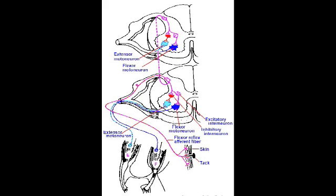This afferent fibre — afferent meaning travelling towards the central nervous system — enters via the dorsal root ganglion, which we can see in this diagram as the pink flexor reflex afferent fibre. This afferent fibre then synapses. We're going to be talking about the primary response now. The primary response is the one that initiates a contraction of a muscle, the flexion of a muscle, that allows us to withdraw our body part from the harmful stimulus.